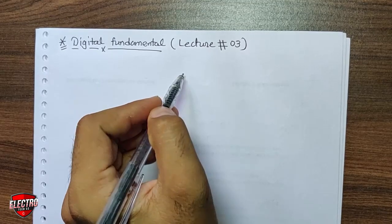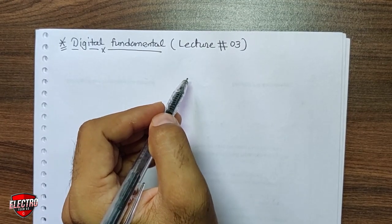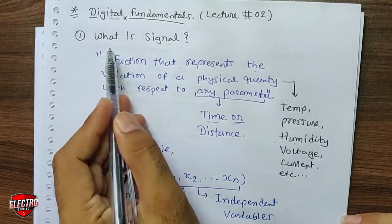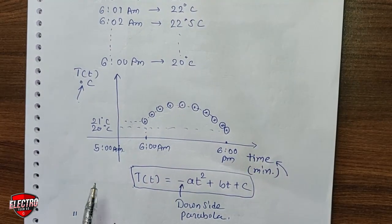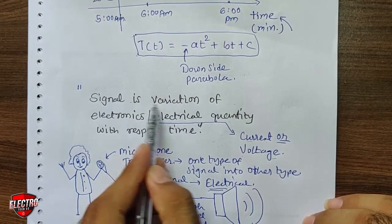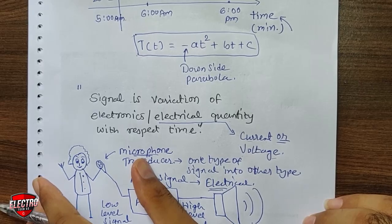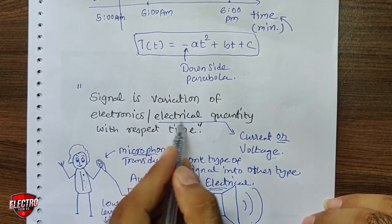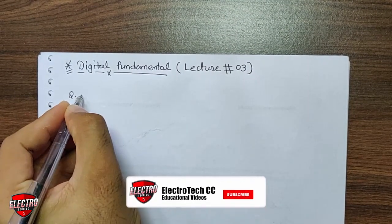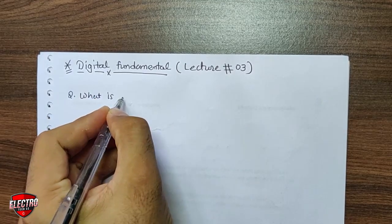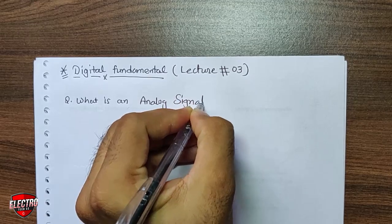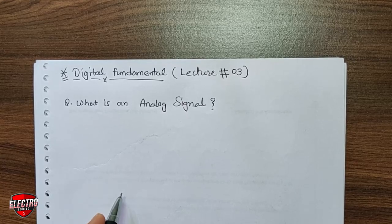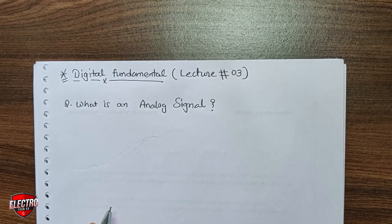Hello dear student, welcome back again in the lecture series of digital fundamentals. This is the third video lecture of digital electronics. In the last presentation we completed the definition of signal and the definition of electrical signal: an electrical signal is a change in current or voltage with respect to time. In this video we will discuss the definition of analog signal and digital signal.